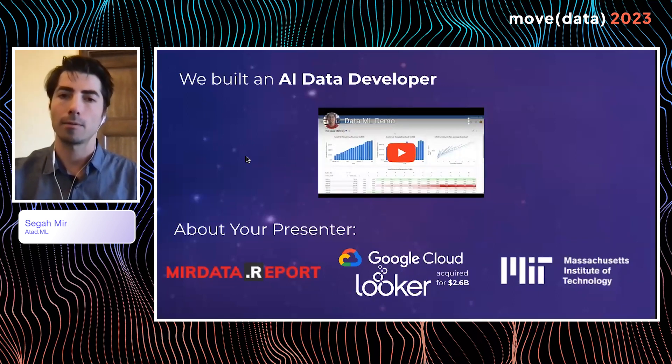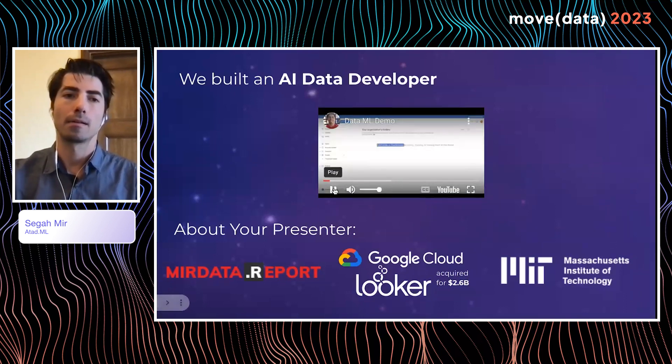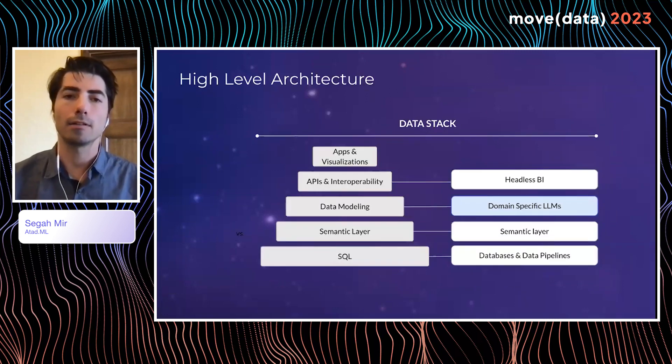I am again, I'm a founder and CEO of a stealth AI company. Previously, I was an early employee at a company called Looker. I'm also an alum of MIT, and I run this podcast and newsletter called MirData.Report. At a high level, the architecture here is pretty simple. Imagine your business intelligence stack. We're basically somewhere in the middle between visualizations and the semantic layer. This allows us to train LLMs on top of existing code base rather than infer directly from the database, which is really hard.